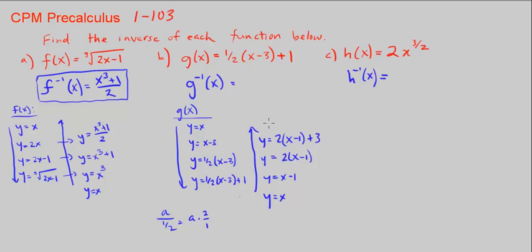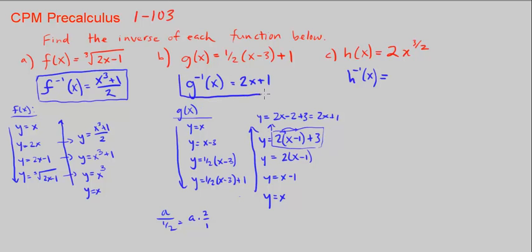We can simplify this. Distributing the 2 gives us 2x minus 2 plus 3, which equals 2x plus 1. So g⁻¹(x) equals 2x plus 1.